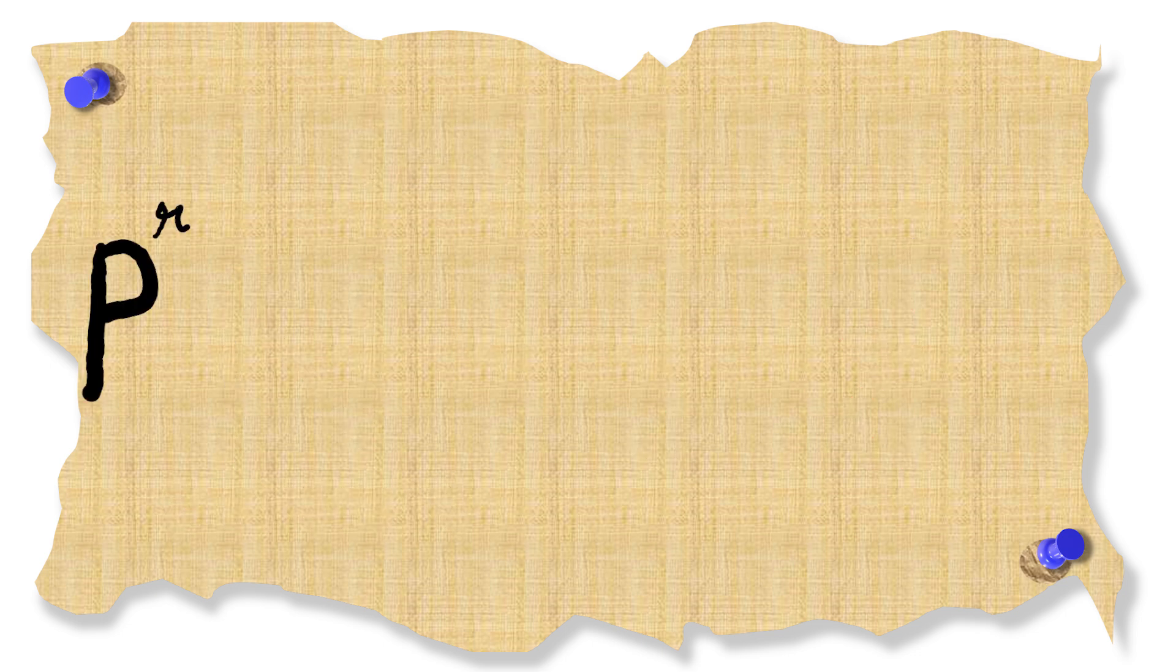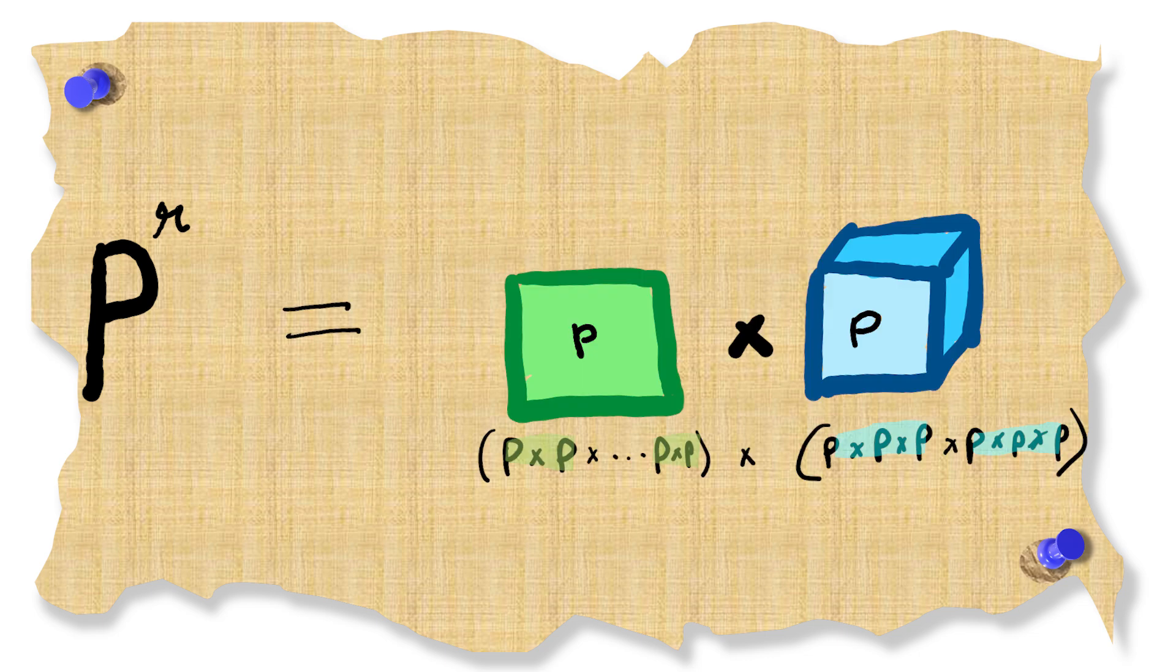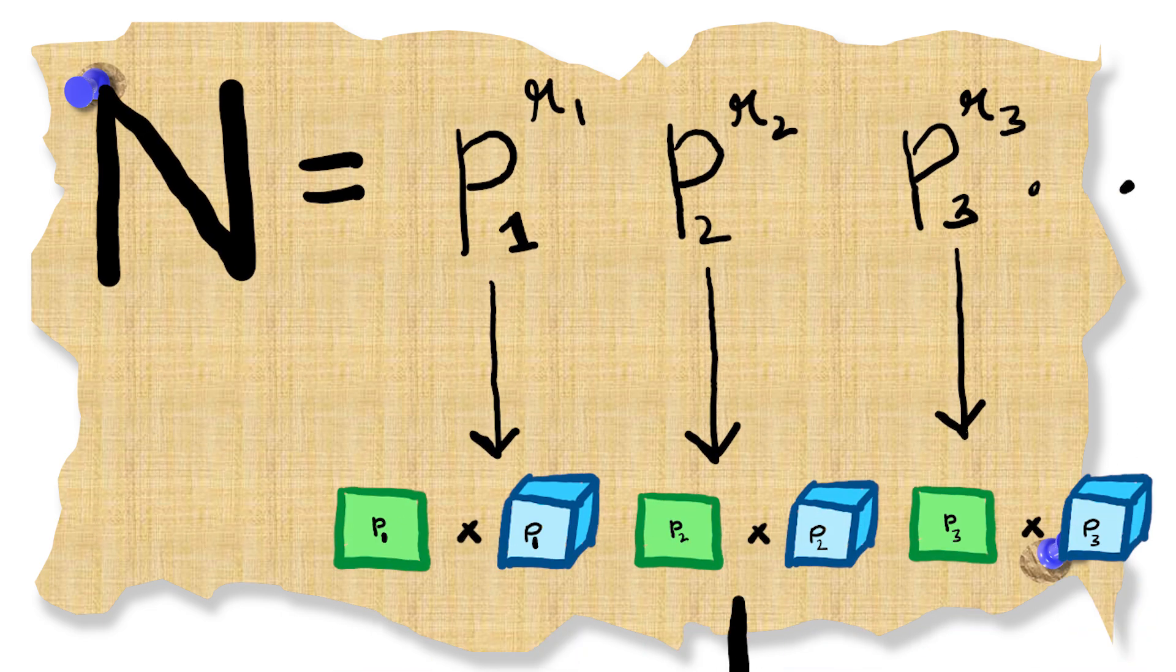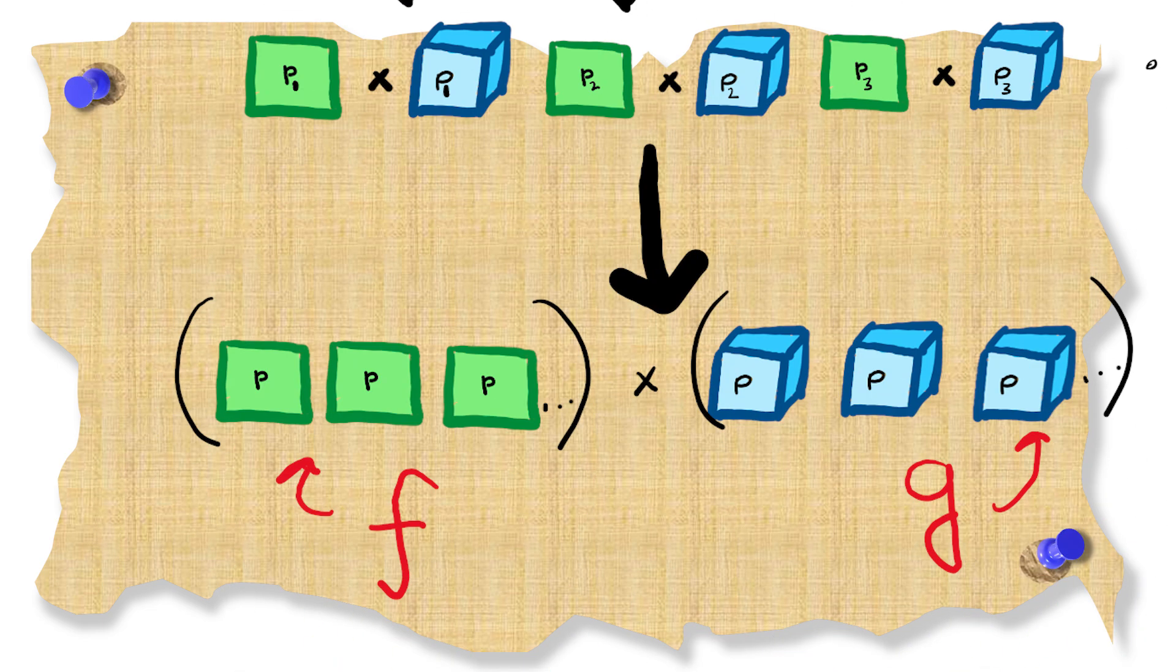We can prove this by first showing that p to the r for some prime p can be expressed as a product of a square and a cube. Once we do that we can take the prime factorization of n collect up all the squares and the cubes to give us f and g.